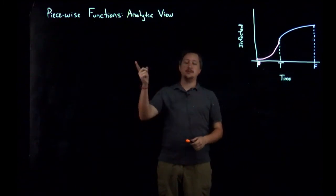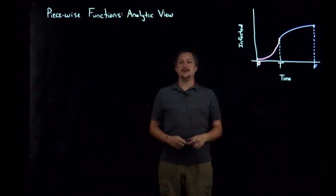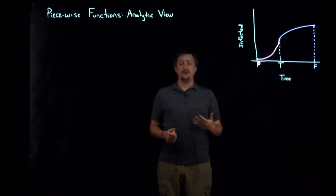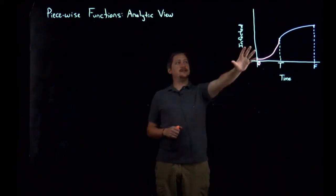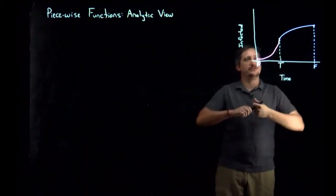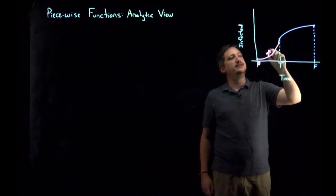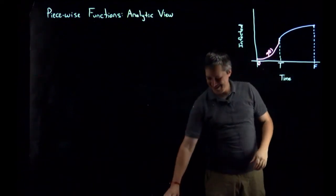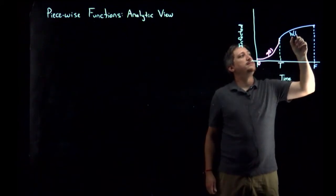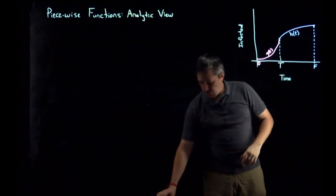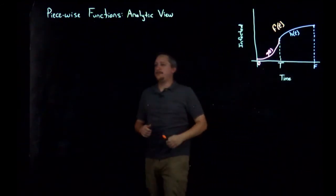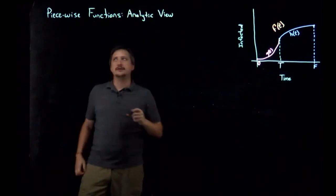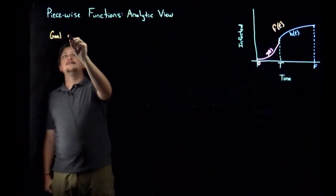In this video we are going to be doing piecewise functions — the analytic view. In the last video we talked about the geometric view, where we gave an example of modeling infection spreading through a population that's susceptible over time. We had a piece G of T and a piece H of T, and we called the whole thing the overall curve F of T.